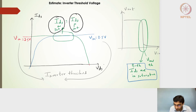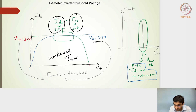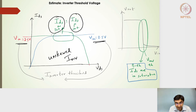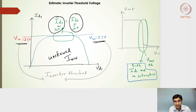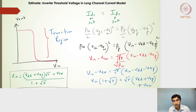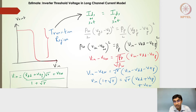For an unskewed inverter at an input voltage of 2.5 volts, the NMOS current profile (blue line) and the PMOS current profile (red line) are drawn. Wherever they intersect, that particular input voltage is the inverter threshold voltage. The transition region is defined when the NMOS saturation current matches the PMOS saturation current.